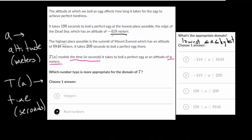And the highest place is on Mount Everest, and that has an altitude of 8,848 meters. So the lowest place is this -418, and the highest place is this 8,848. The numbers involving 198 and 209, that's in terms of time. That's how many seconds it takes to boil at those different altitudes. But time is our range. That's our function values. So that doesn't deal with our domain. So if you see those in here, you can immediately just eliminate those.